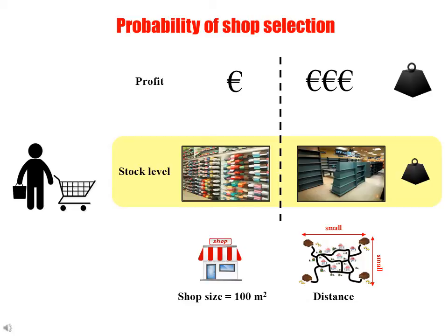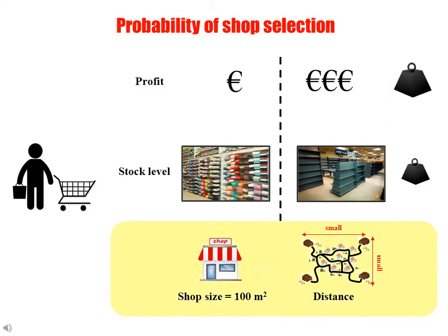Given everything the same between two shops, the shop with a higher percentage stock level is more likely to be chosen as a shopping destination by people. Between these two criteria, profit carries more weight compared to stock level. In this game, each shop has the same area — 100 meter square. Also, since the city is small, people do not consider distance as an evaluating criterion. Thus, shop size and distance to the shop do not impact the probability of shop selection.